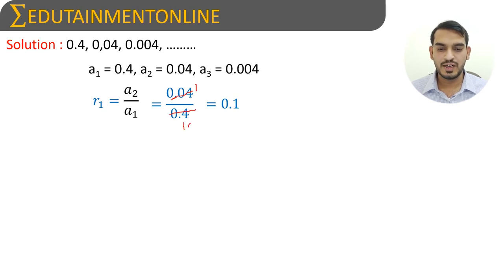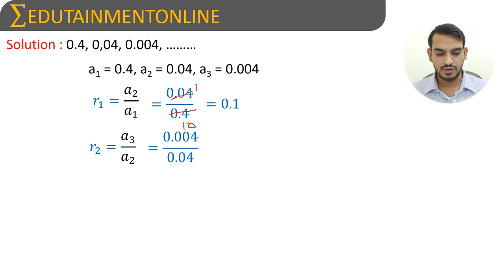The next ratio, a₃ by a₂, equals 0.004 by 0.04. Again, 0.004 is 1 times and this is 10 times, so 1 by 10 is 0.1. Since the ratio is the same, we can say the series is in geometric progression.